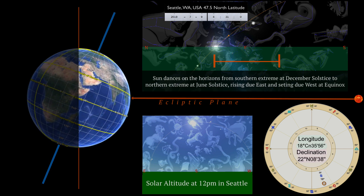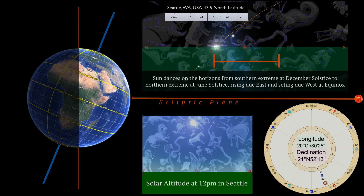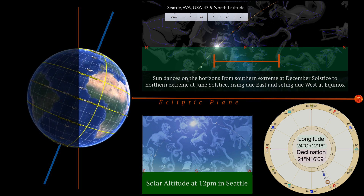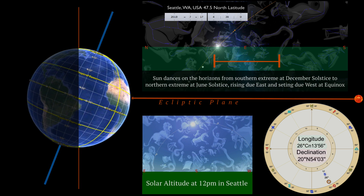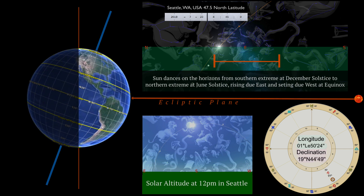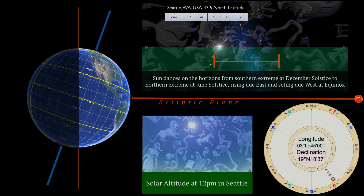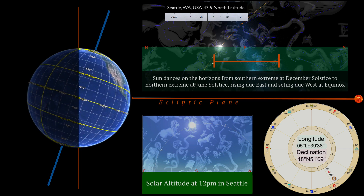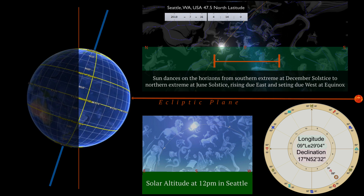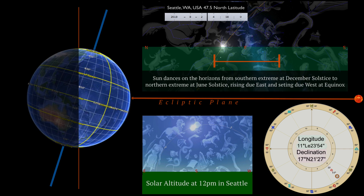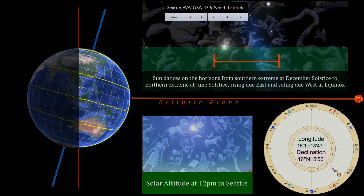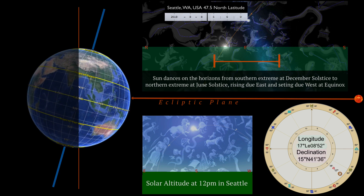The Tropics of Capricorn and Cancer and the tropical zodiac derive their name from 'tropicos,' a Greek word which means 'turn around.' The Latin term is 'solstice,' which means 'sun stops.'